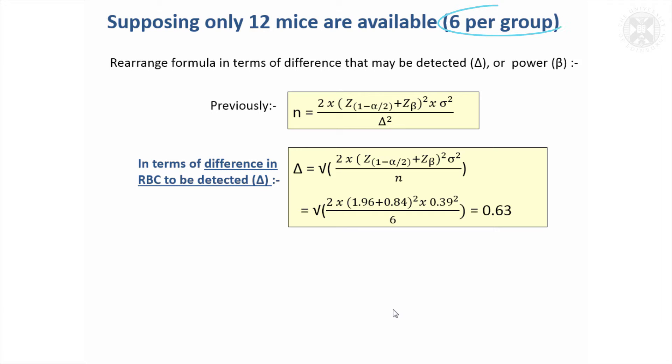If there were just six mice available per group, if we turned that formulae around, we would end up with this formulae—just rearranging it—and we could say that the difference that we'd be able to detect if we just had six mice per group, and we'll still go for 80% power,